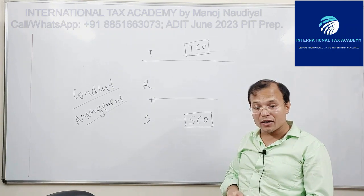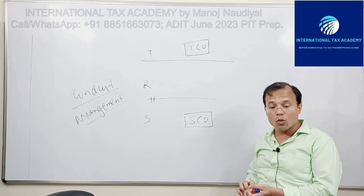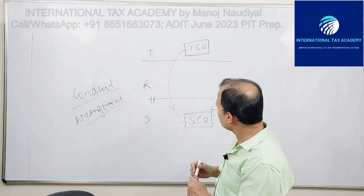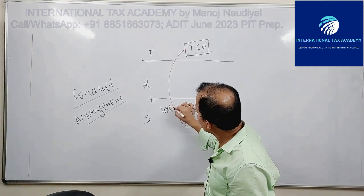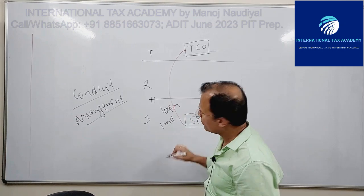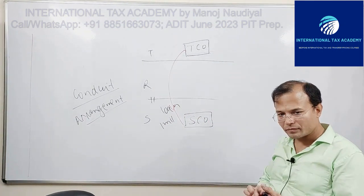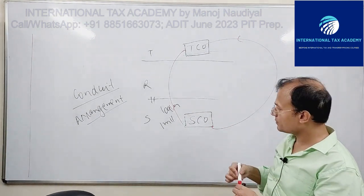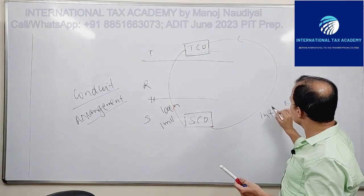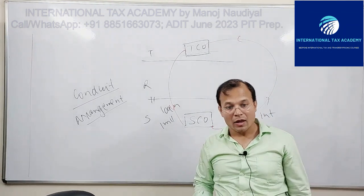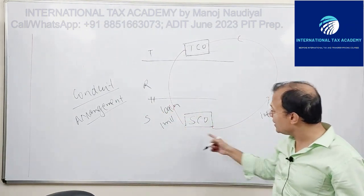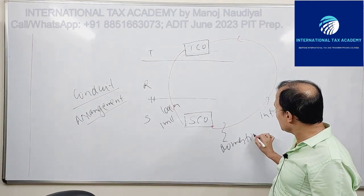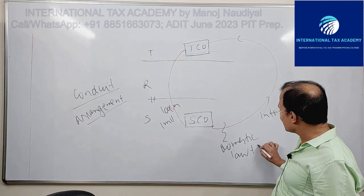Esco is a subsidiary of Tyco. Tyco has given a loan of 1 million dollars. And therefore it would receive the interest. But because there is no treaty between S and D, that is why this interest will be taxable under domestic law.